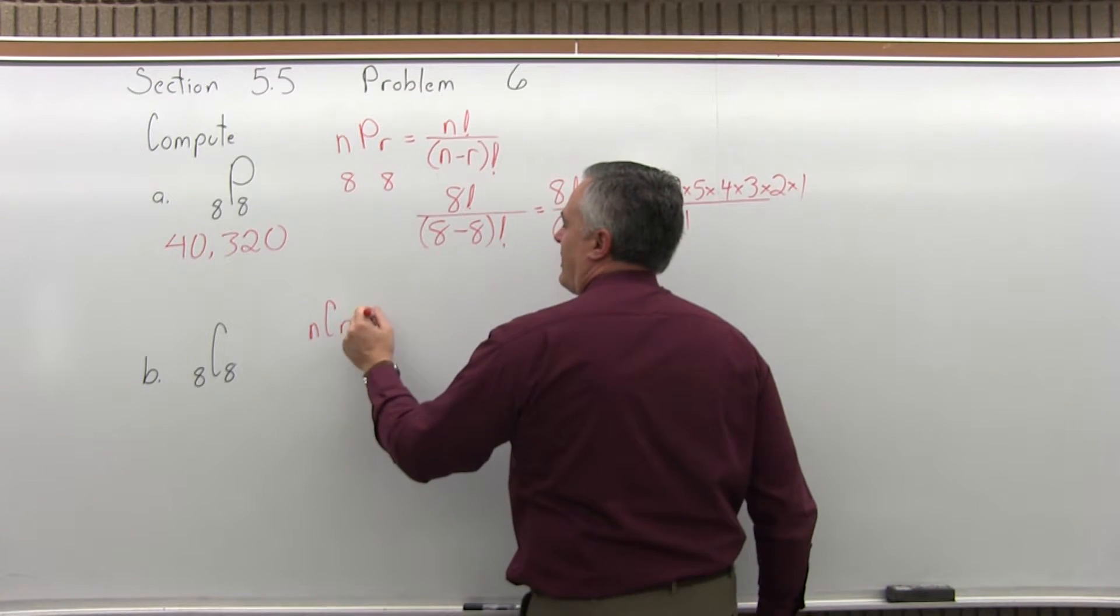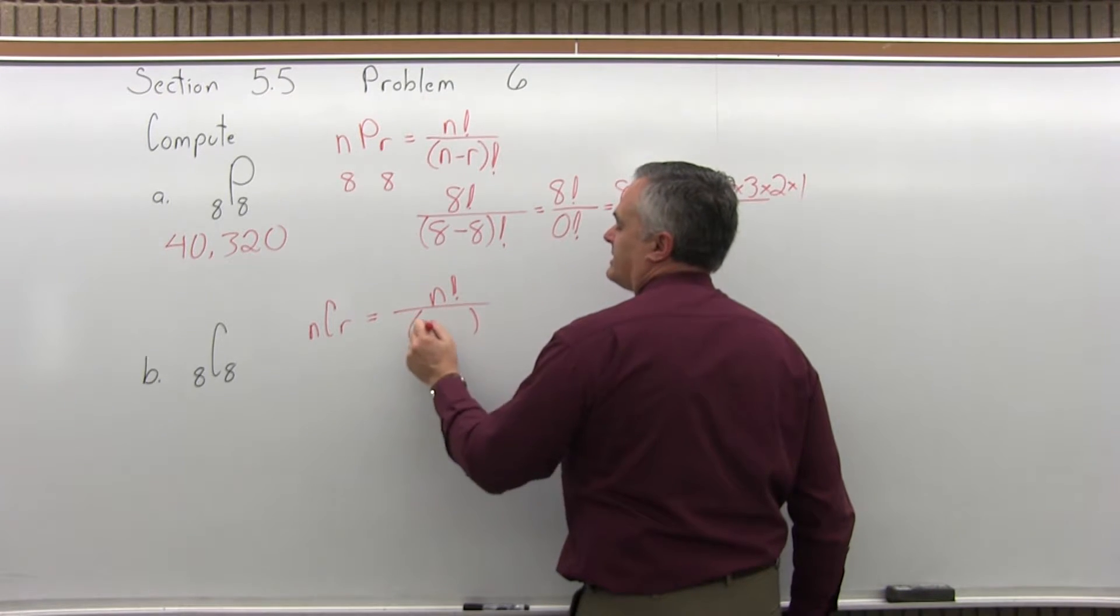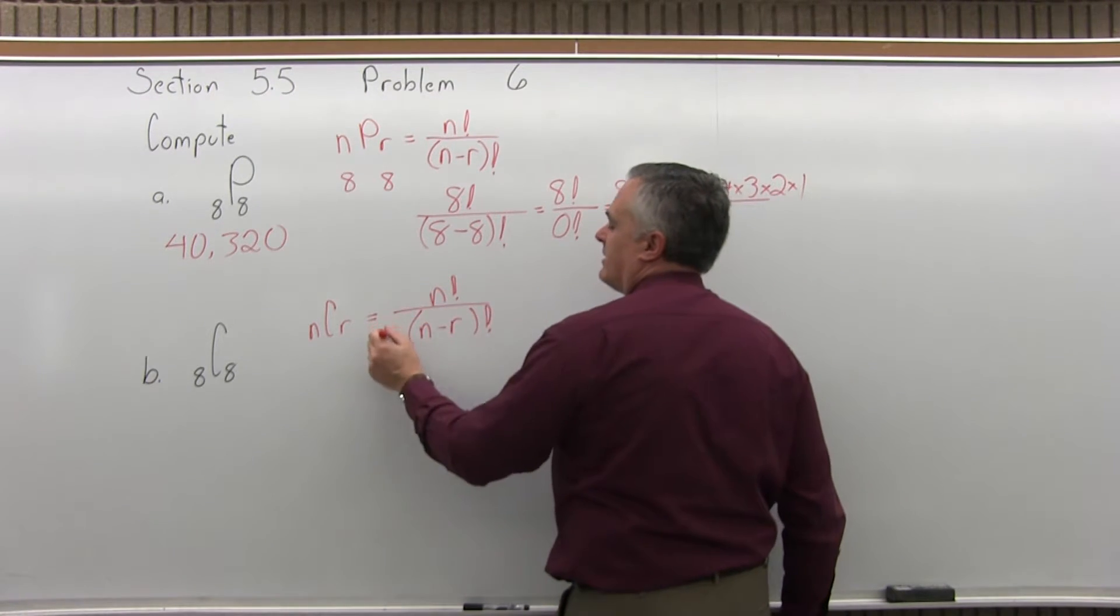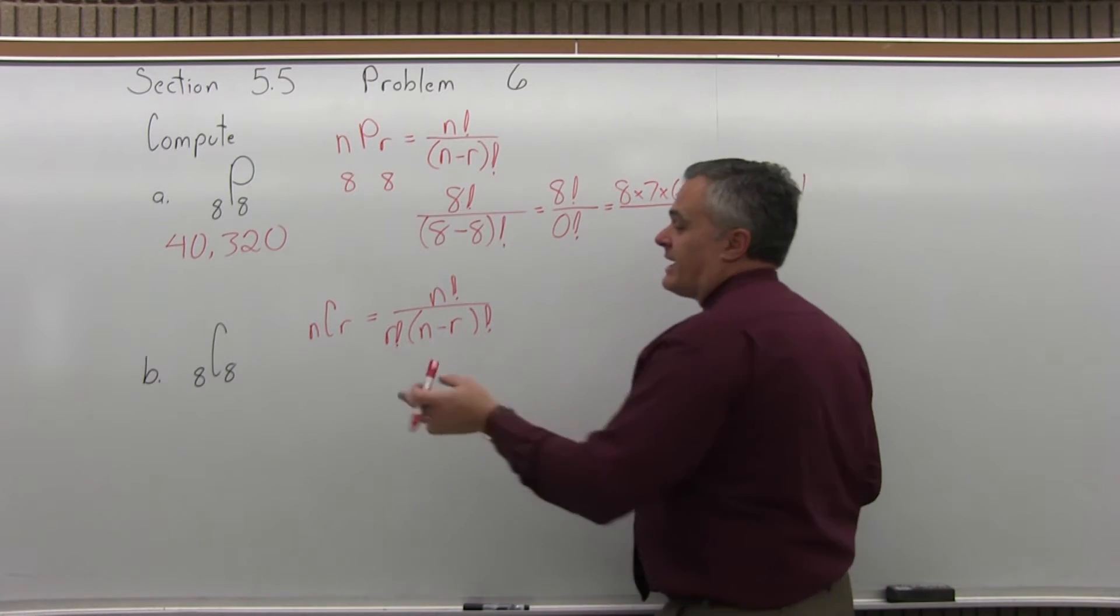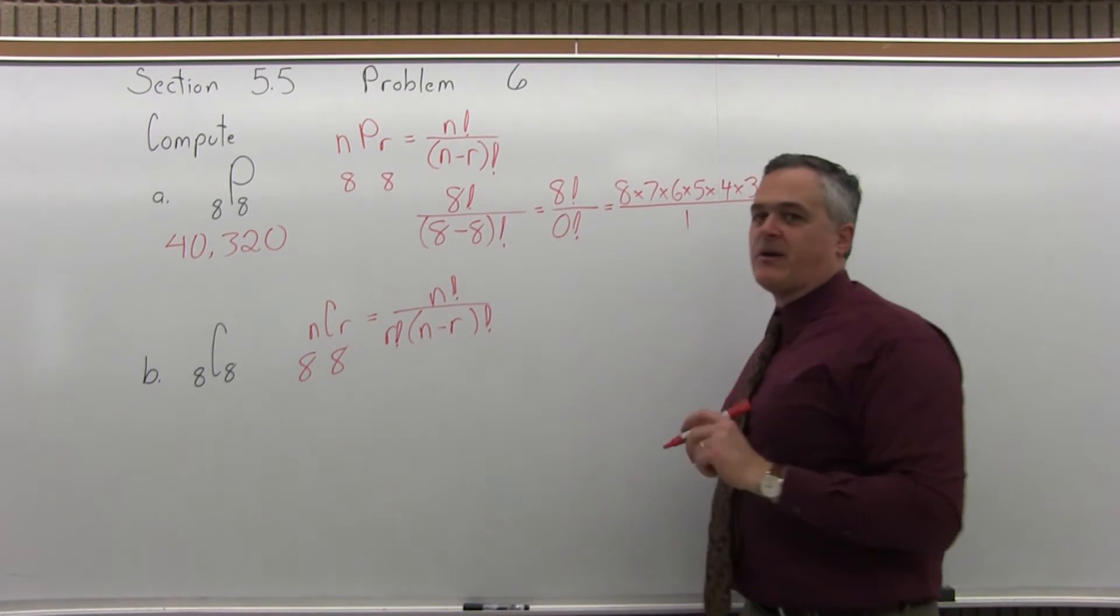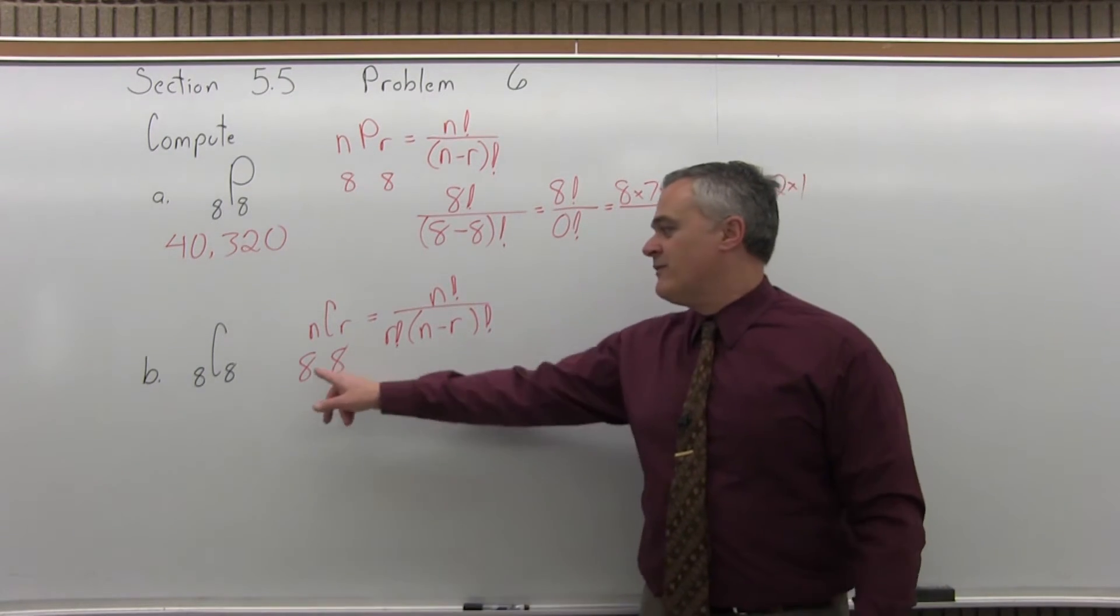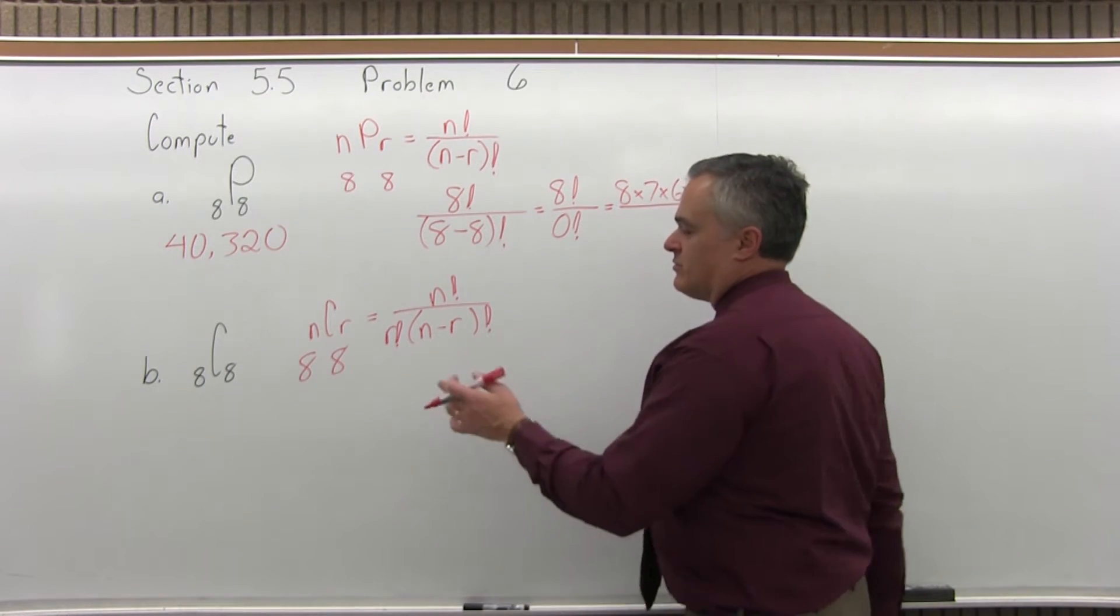The combination formula: n combination r equals n factorial in the numerator over n minus r factorial in the denominator times r factorial in front of the parentheses. So, again, they're both 8, so which one is n, which one is r, it doesn't really matter.